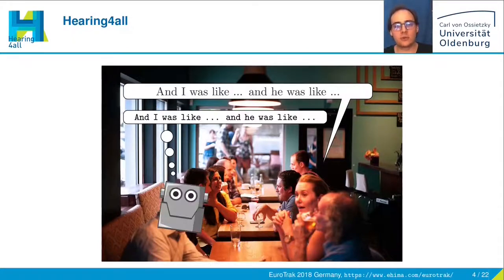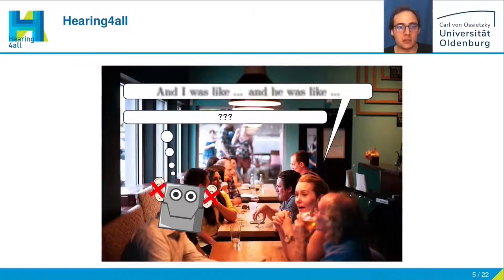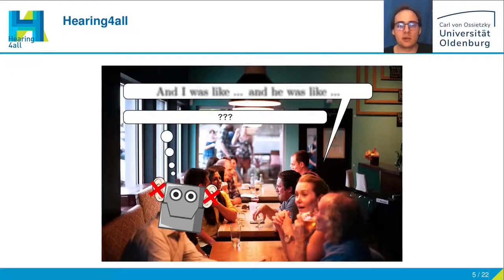If we use a model to predict how a normal hearing person understands speech, we can also make it hearing impaired to simulate what the hearing impaired person is understanding, in order to figure out what might be impaired and why they do not understand speech as well as normal hearing listeners.